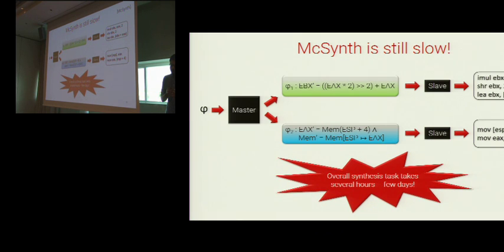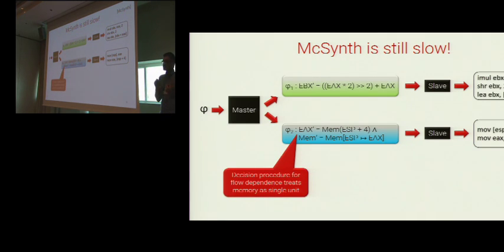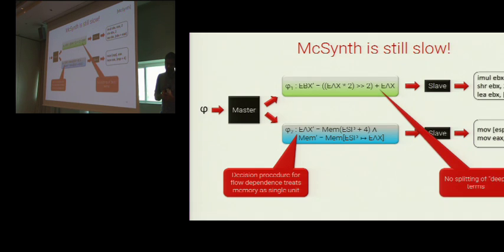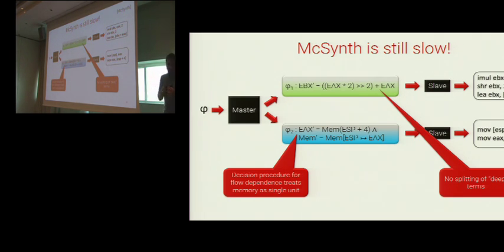MixSynth takes several hours or even a few days to find this implementation. What are the key limitations in the MixSynth algorithm? First, the decision procedure used by the master to test for flow dependence is extremely conservative — it treats memory as a single unit, so splits that are actually legal are conservatively discarded. Also, MixSynth splits individual conjuncts in phi into independent sub-formulas but never attempts to split a deep term in phi. So the slave ends up enumerating long instruction sequences that implement such deep terms.